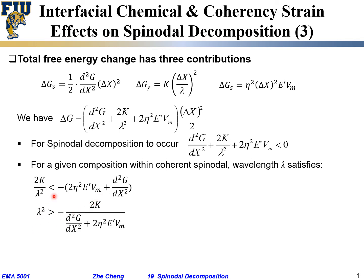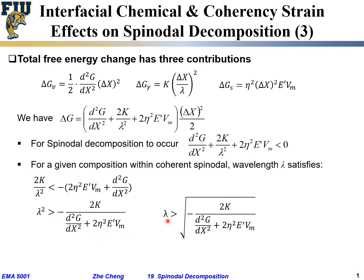Rearranging the equation, the lambda squared term — the wavelength squared term — has to be greater than 2K over the summation of those two terms with a negative sign. Lambda squared would be positive, 2K would be positive, and the denominator has to be negative because of that negative sign. As a result, the wavelength lambda has to be greater than that square root term.